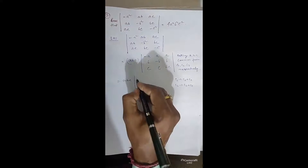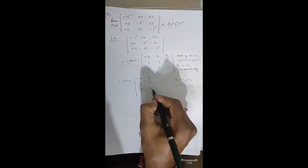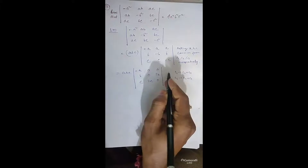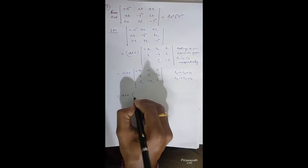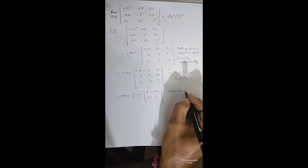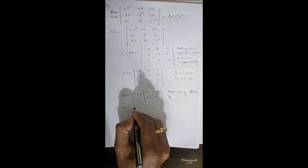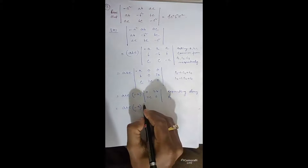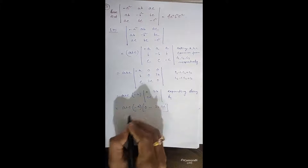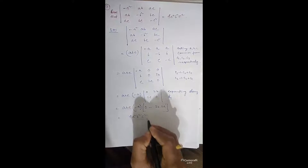After C2+C1 and C3+C1, with C1 fixed, we have: row 1: (−A, 0, 0), row 2: (B, 0, 2B), row 3: (C, 2C, 0). Expanding along R1: ABC × (−A) × determinant of (0, 2B / 2C, 0) = ABC × (−A) × (0 − 2B×2C) = ABC × (−A) × (−4BC) = 4A²B²C², which equals RHS.